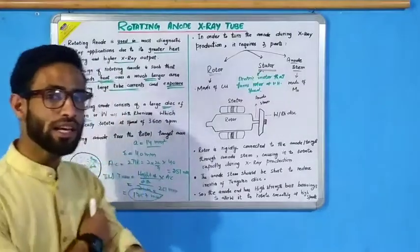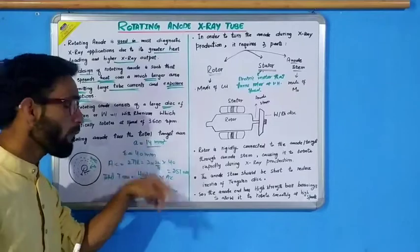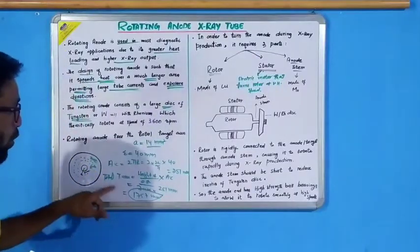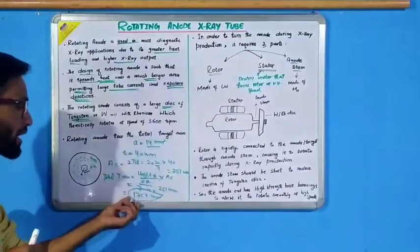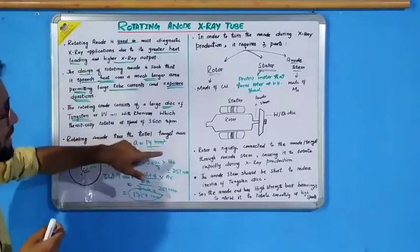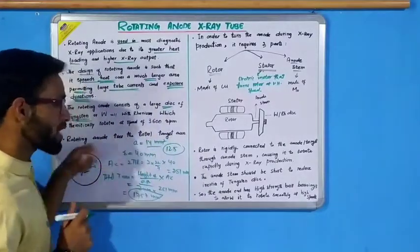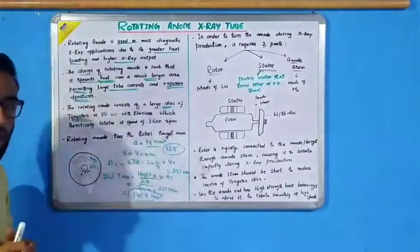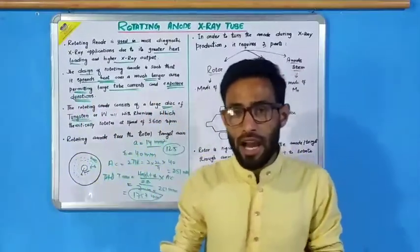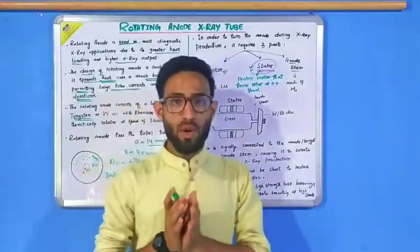So initially, the target area where electrons bombard was 14 mm, but because the rotating anode rotates, the total target area where electrons bombard becomes 1757 mm². You can imagine from here that it is nearly 125 times larger than when it does not rotate. This shows that the rotating anode increases the total target area where electrons bombard.